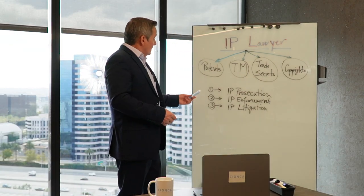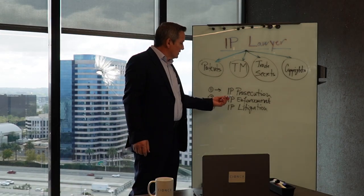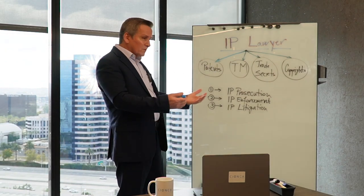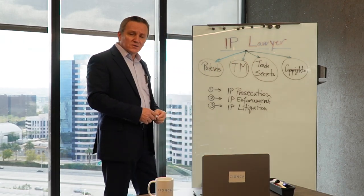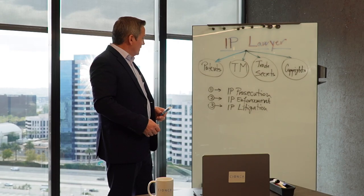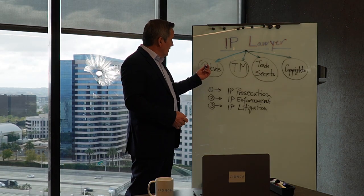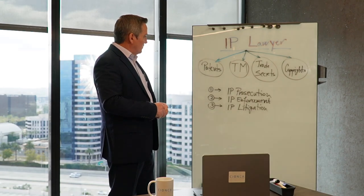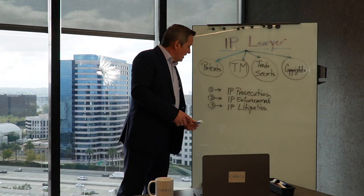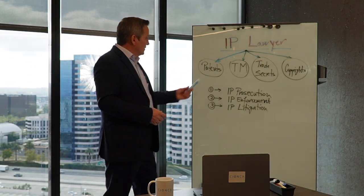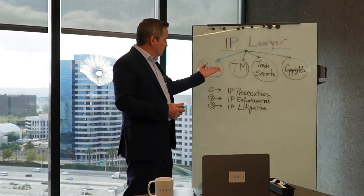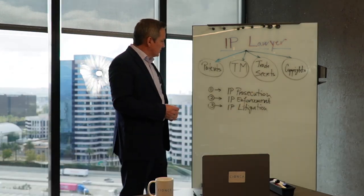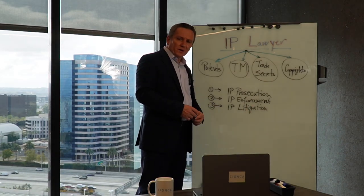Some IP lawyers may also choose to do IP enforcement — meaning you enforce the patent, trademark, trade secrets, or copyrights for clients, or you defend clients when they are accused of infringing any of these types of intellectual property. For example, if a client has a patent that is being infringed, in the enforcement phase we could send a cease and desist letter and maybe even file a lawsuit if needed — that would be the IP litigation phase. Similarly with trademarks: if the client is accused of trademark infringement, we respond to that cease and desist letter and, if a lawsuit is filed, we defend the client.